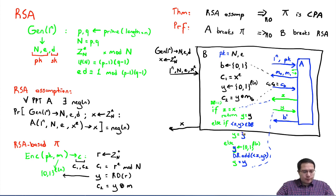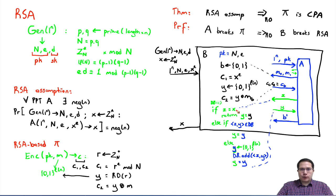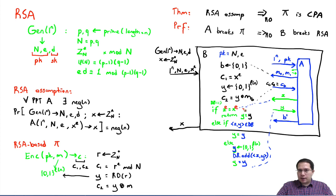There is one important thing to realize: B does not know x — it only knows x^e mod n. So B cannot directly run the condition z = x. But what it can do is compute z^e and compare it with x^e. B is given e, so it can compute z^e given z, and it knows x^e, so it can compare them. This comparison essentially means that z and x are equivalent modulo n, so we are not losing anything important by changing this comparison.